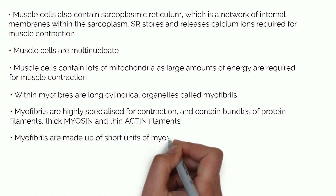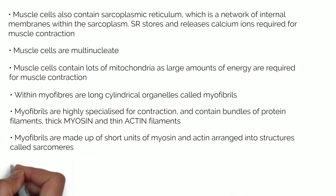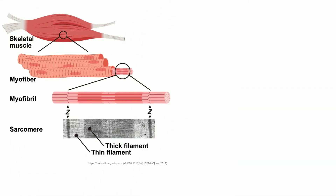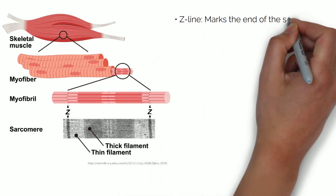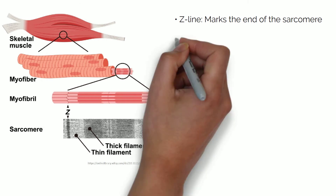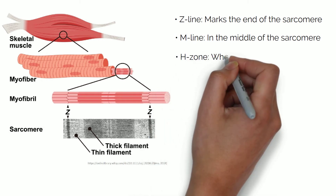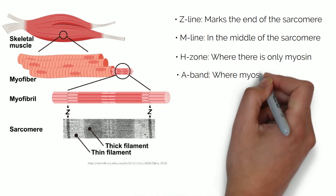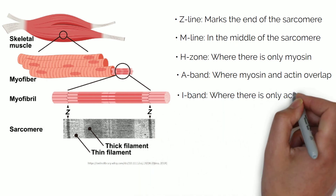Myofibrils are made up of short units of myosin and actin arranged into structures called sarcomeres. Myosin and actin move past each other to make muscles contract. The sarcomere structure consists of: the Z-line, which marks the ends of the sarcomere; the M-line, which is in the middle of the sarcomere; the H-zone, where there is only myosin within the centre of the sarcomere; the A-band, which is where myosin and actin overlap; and the I-band, in which there is only actin.